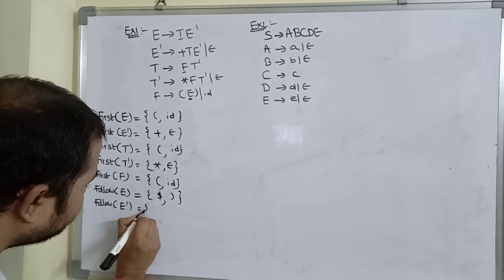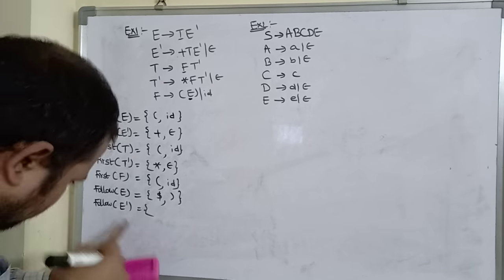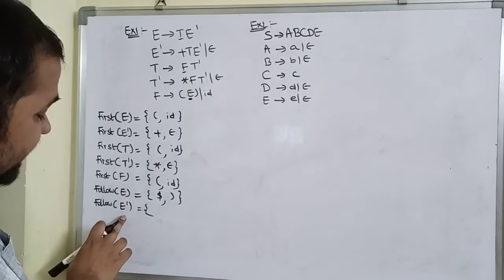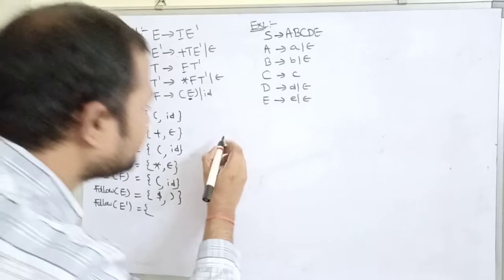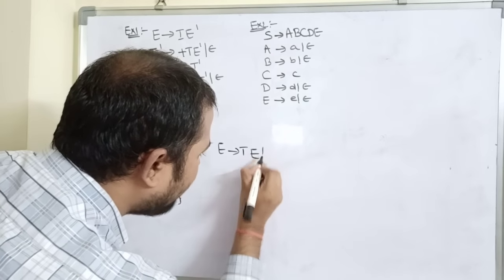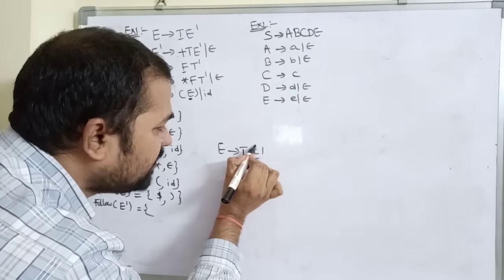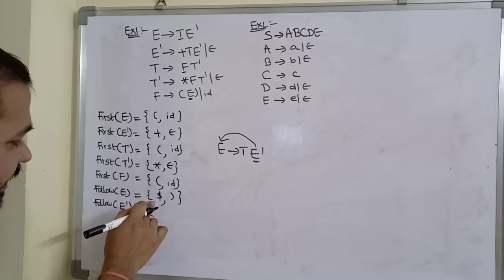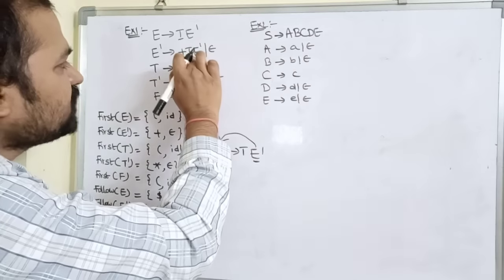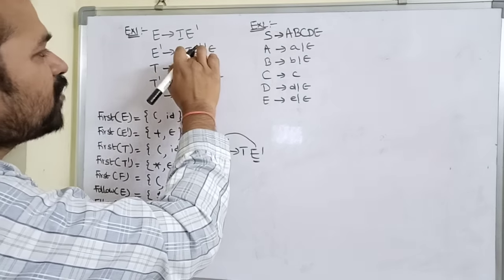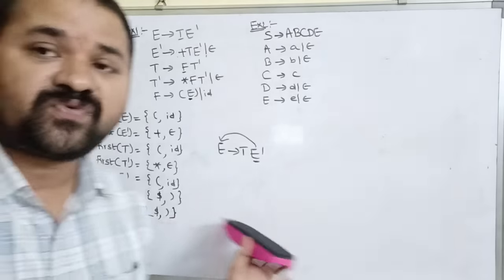FOLLOW of E': searching for E' in the right-hand side, we find it in E implies T·E' and E' implies plus·T·E'. In both cases, no symbol follows E', so FOLLOW of E' becomes FOLLOW of E, which is {dollar, right-parenthesis}.